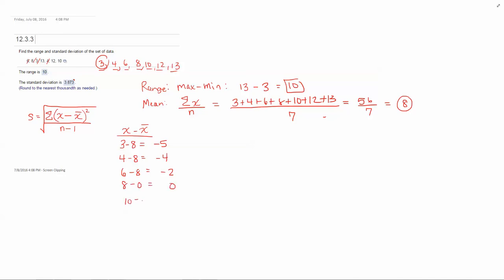8 minus 8 which is 0. 10 minus...oh I wrote that wrong. 10 minus 8 which is 2. 12 minus 8 which is 4. And 13 minus 8 which equals 5. So each value subtract the mean from it.